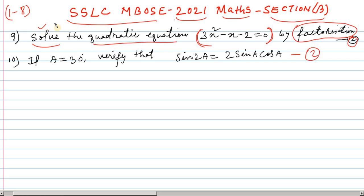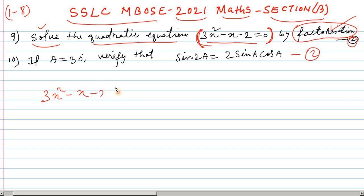Solving question number 9 means finding the value of the variable. The value of the variable is x. This is the quadratic equation — 2 equals 0. This is the factorization method.